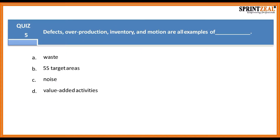Question five: Defects, overproduction, inventory, and motion are all examples of what? Waste, 5-S target areas, noise, or value-added activities?